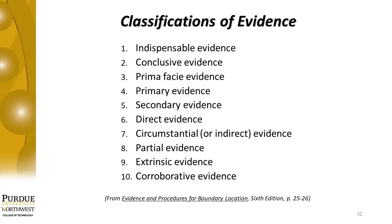Evidence varies in weight and dignity. The first classification is indispensable evidence — evidence necessary to prove a fact. Example: conveyance of property must be in writing, so a conveyance cannot be proved without proof that there was a written document. Second is conclusive evidence — that which the law does not permit to be contradicted. Example: the contents of conveyance writings are conclusive as between parties except for pleadings of illegality, fraud, mistake, or reformation. Also, a written document or contract cannot be altered by oral testimony, and everyone is presumed to know the law.